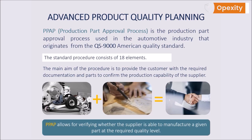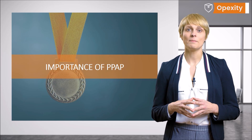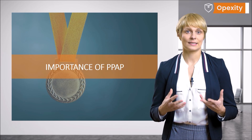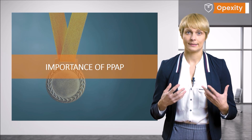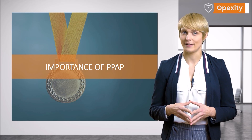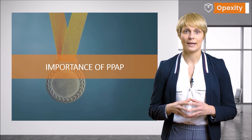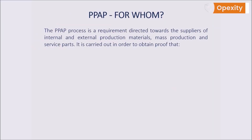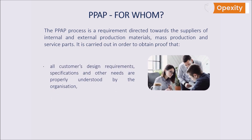PPAP allows for verifying whether the supplier is able to manufacture a given part at the required quality level. PPAP has been defined in order to correctly understand the customer requirements and the requirements set out by the design data, and to ensure that suppliers' production processes allow for manufacturing a product that meets the customer's quality and quantity requirements on a continuous basis. The PPAP process is a requirement directed towards the suppliers of internal and external production materials, mass production, and service parts. It is carried out in order to obtain proof that all customer's design requirements, specifications, and other needs are properly understood by the organization.